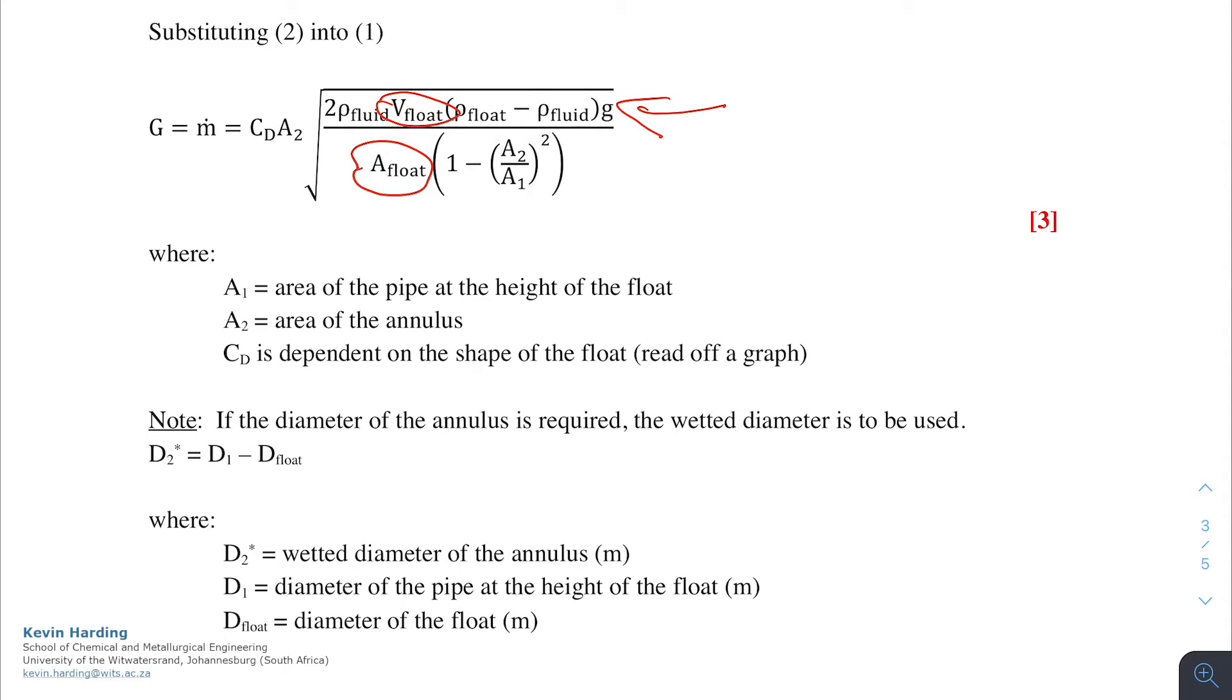One of the differences here is that when we are looking at area A2, which was the area of the annulus, please note that we need to use the wetted diameter to find that area, where the wetted diameter is the difference between diameter D1, the total diameter, and the diameter of the float.